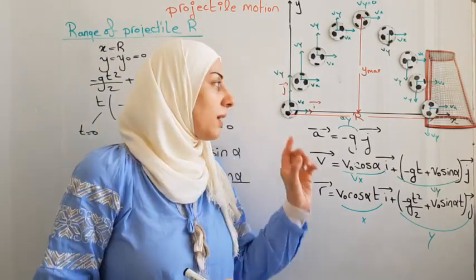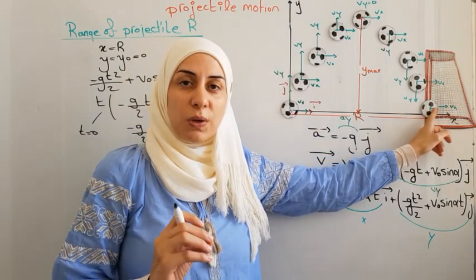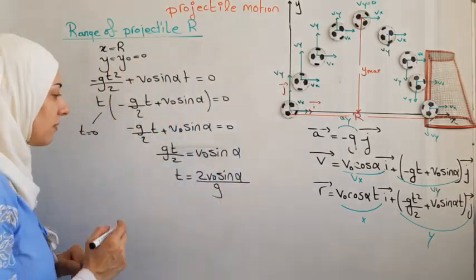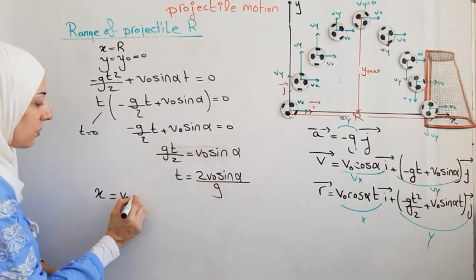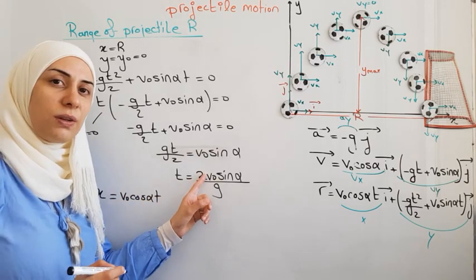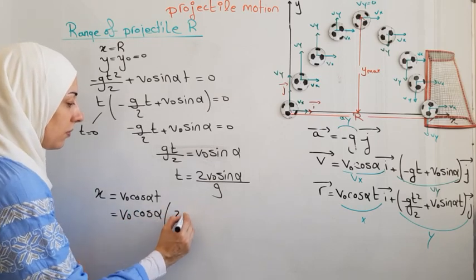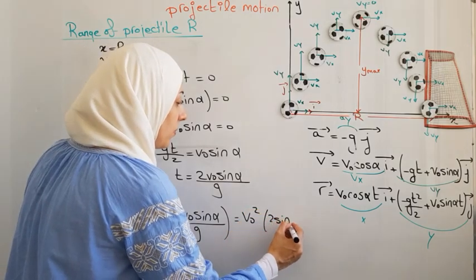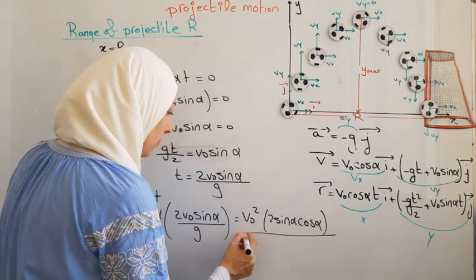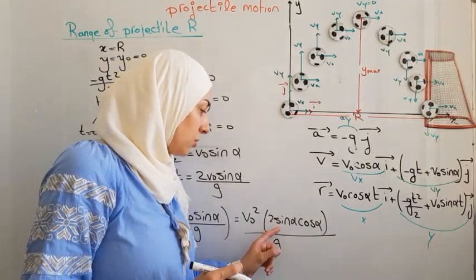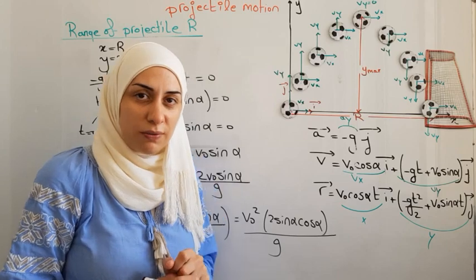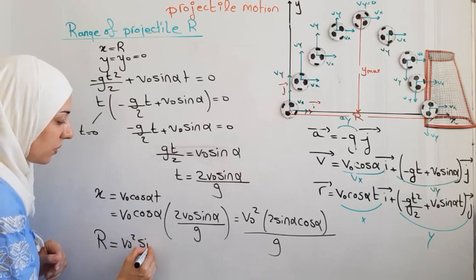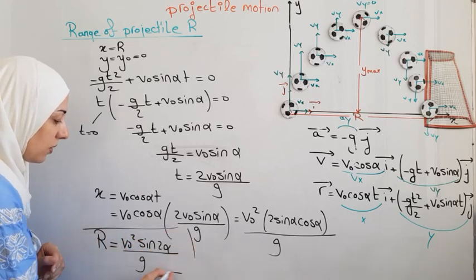The second solution gives the time needed to reach the range point. Substituting this time into x = v₀·cos(α)·t and using the identity 2·sin(α)·cos(α) = sin(2α), we obtain the range formula: R = v₀²·sin(2α) / g.